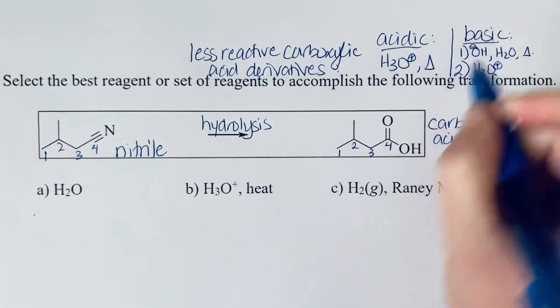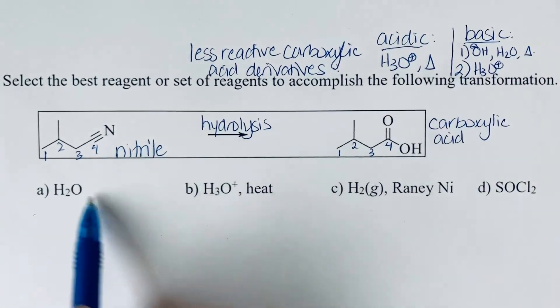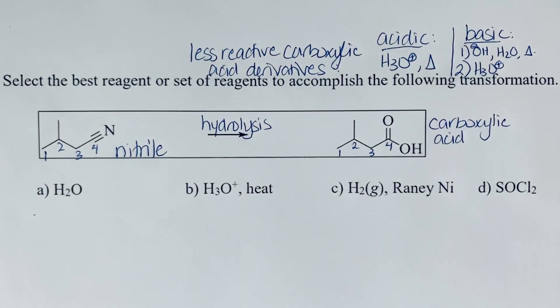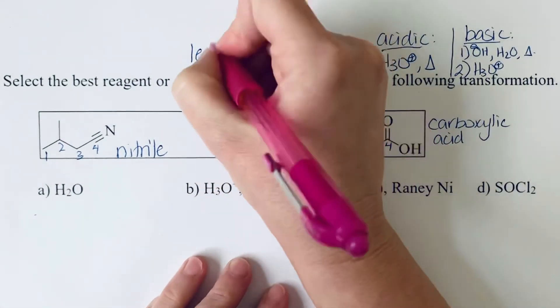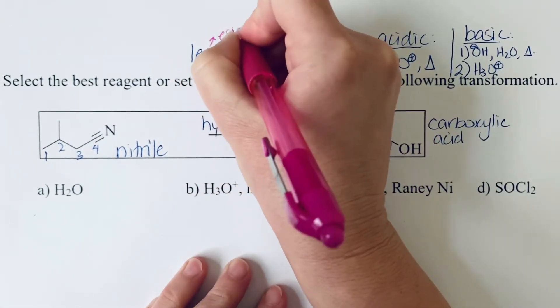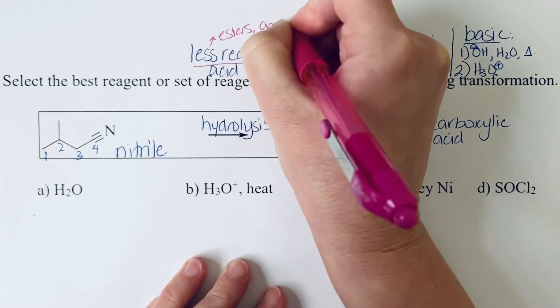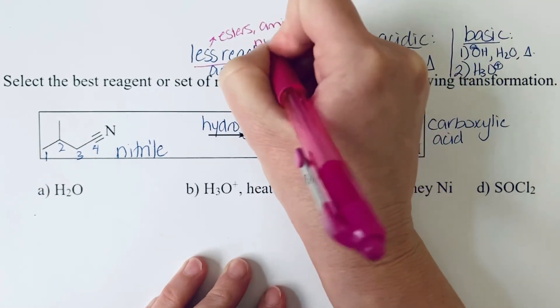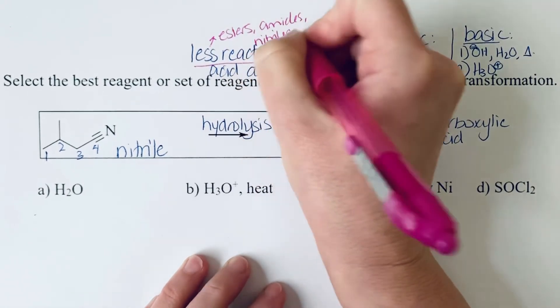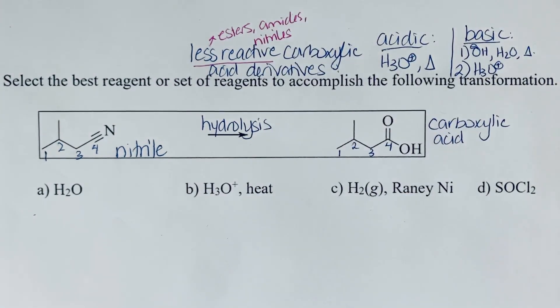Now that we've recognized that we have one of our less reactive carboxylic acid derivatives, and just to be clear, these less reactive derivatives are esters, amides, and nitriles. So your carboxylic acid derivatives that do not have good leaving groups.